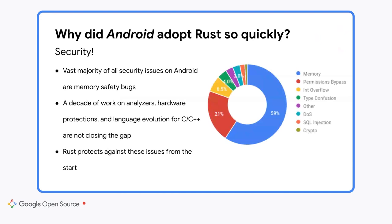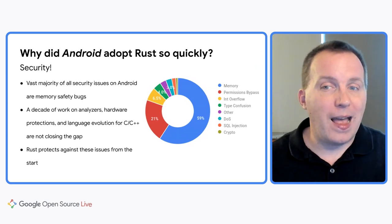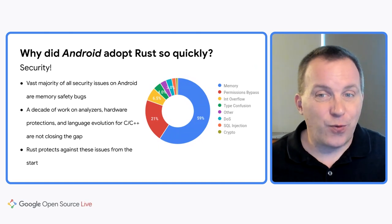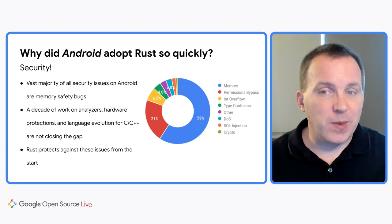As an operating system delivering code to over 3 billion devices, the cost to our users, partners, and Google itself is really high for each and every security issue. The vast majority of those security issues are memory safety bugs. We've invested heavily in hardware features, improved our compilers, built static analyzers, and dynamic sanitization tools to try to address this issue. But the exploits continue to be found faster than we can keep up with them via tooling. So for us, and especially in new code that we're writing, Rust is absolutely the smartest choice. It protects us from the entire class of memory safety bugs right from the start, and it's already paid back our investment in it on Android.